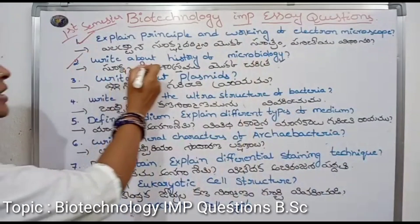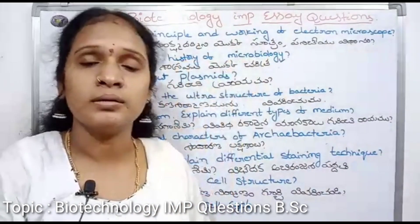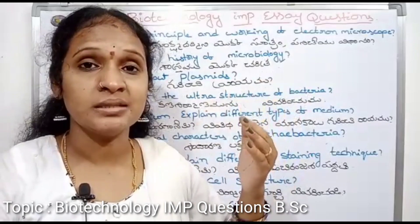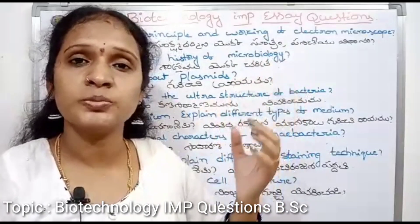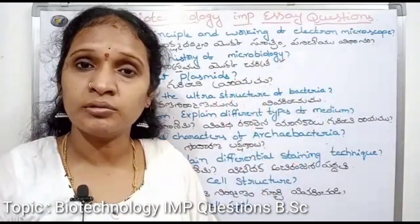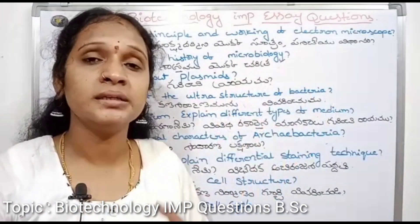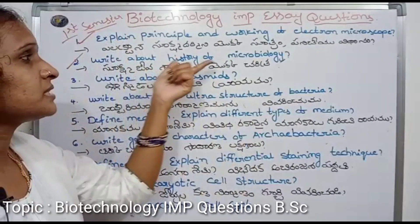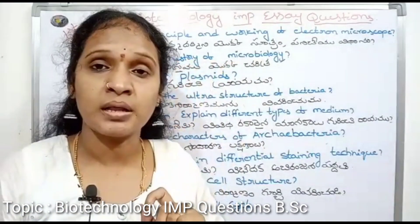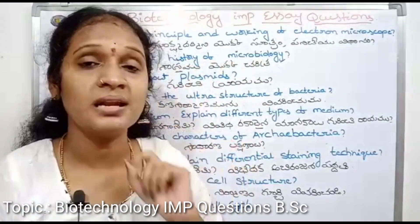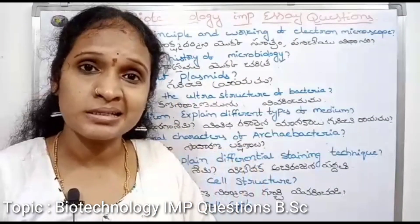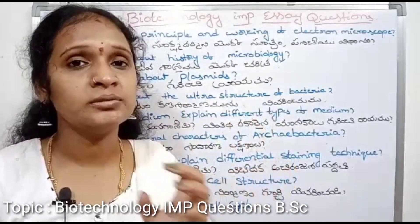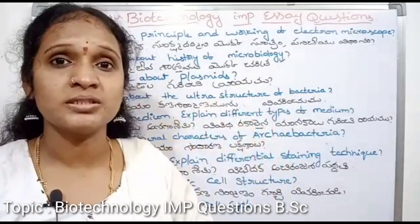Second question: Write about the history of microbiology. How did microbiology start? First, we have Louis Pasteur. He was the most able to develop microbiology. This material is dedicated to the study of the human brain in the earlier centuries.